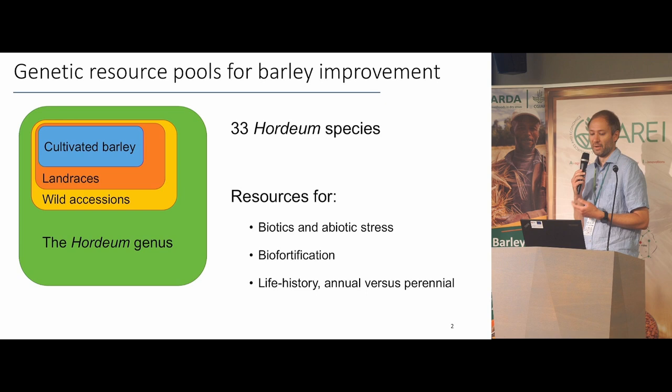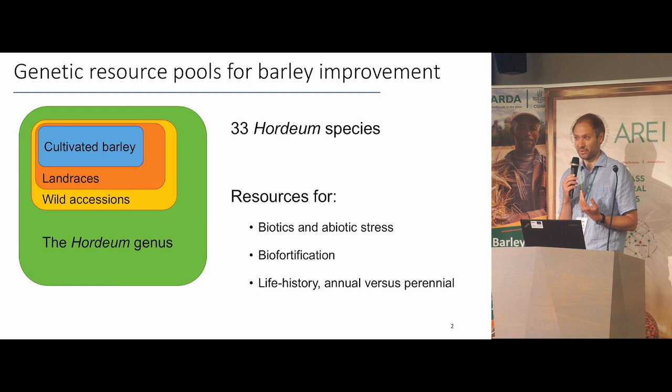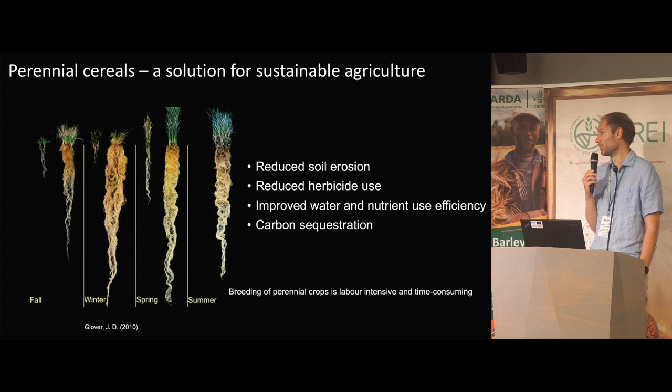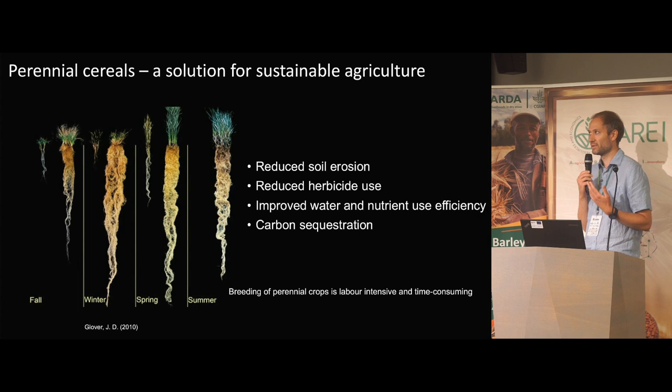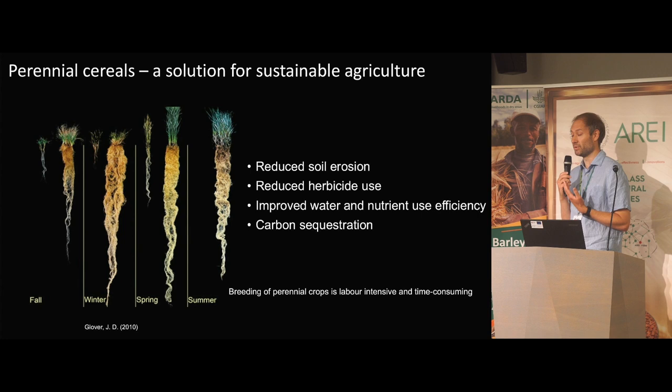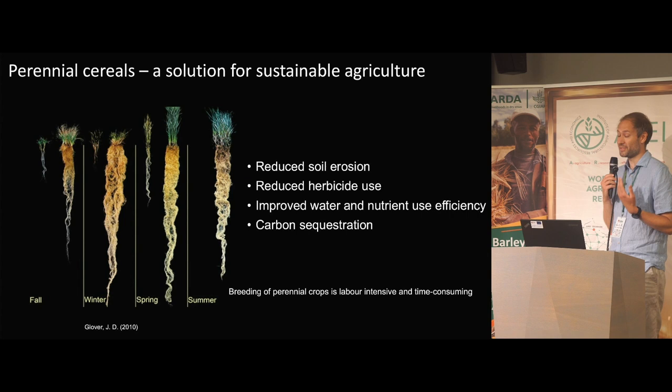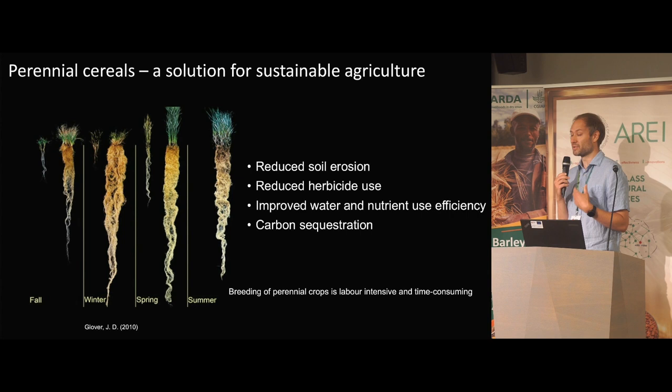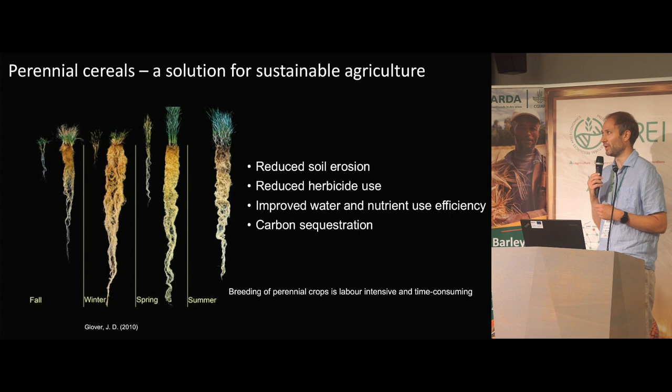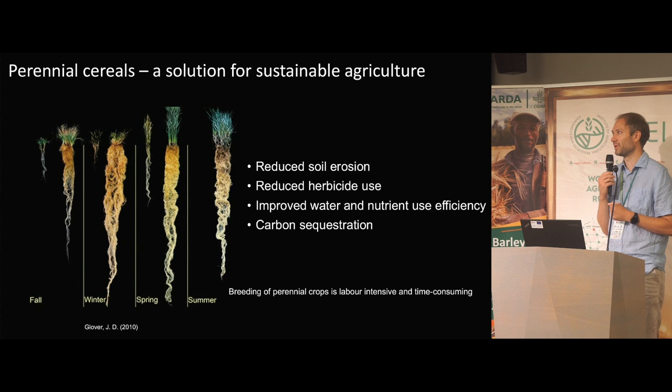We believe perennial cereals could be a solution for sustainable agriculture, as they invest more in root growth and continual growth through seasons. Benefits include reduced soil erosion, improved water and nutrient use efficiency, carbon sequestration, and reduced herbicide use as they always cover the soil with no need for tilling every harvest season. However, breeding perennial crops is labor intensive and time consuming.